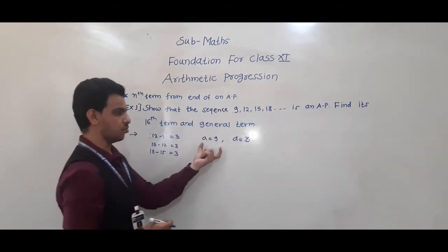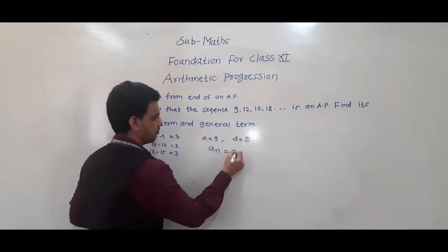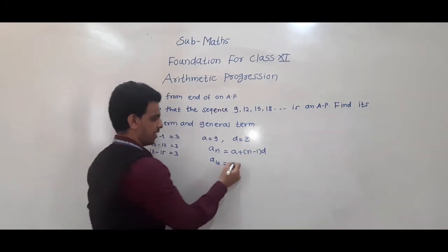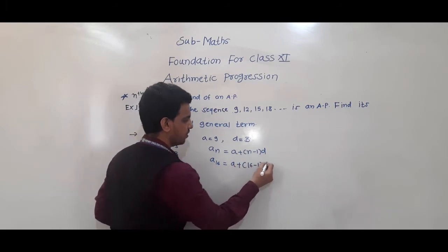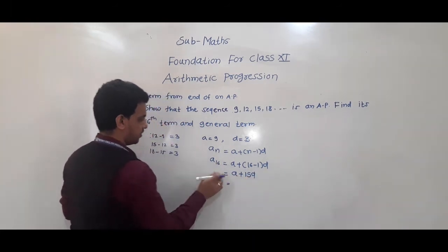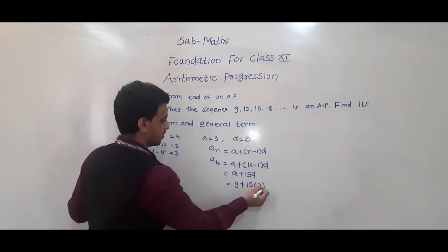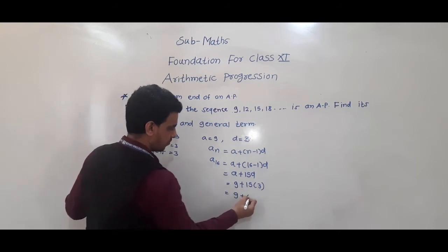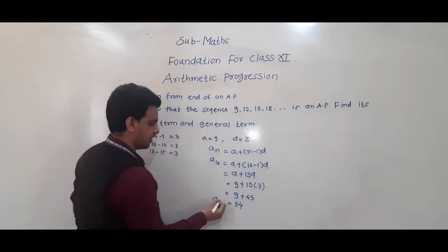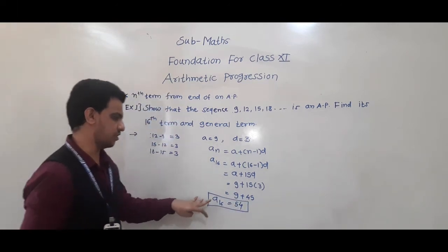Now we find the 16th term. Using an = a + (n−1)d, a16 = a + 15d = 9 + 15×3 = 9 + 45 = 54. So, the 16th term is 54.